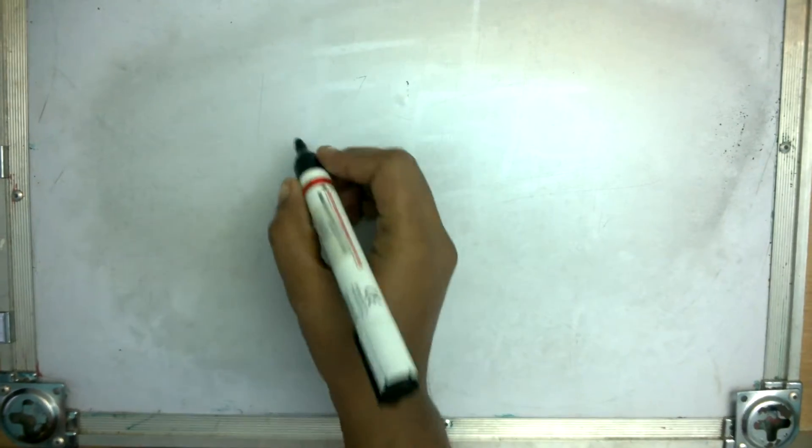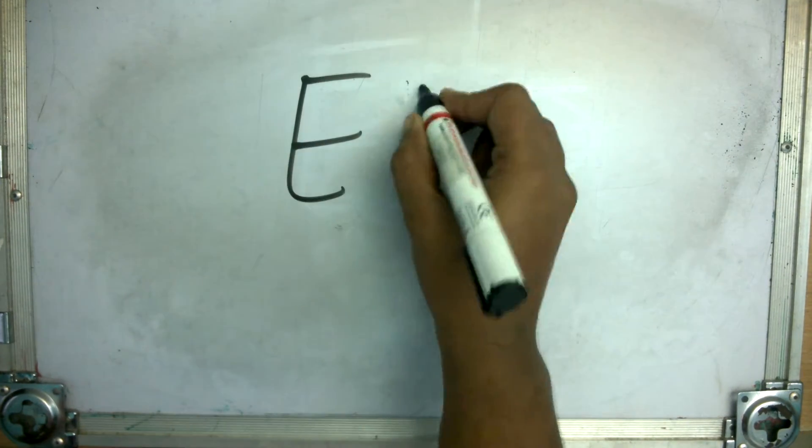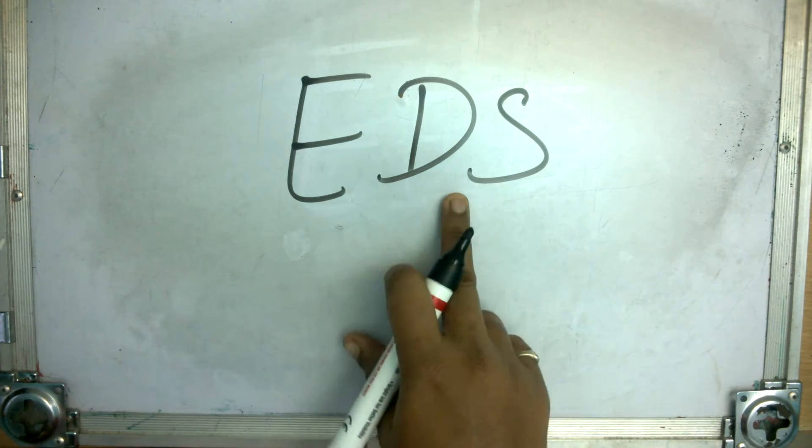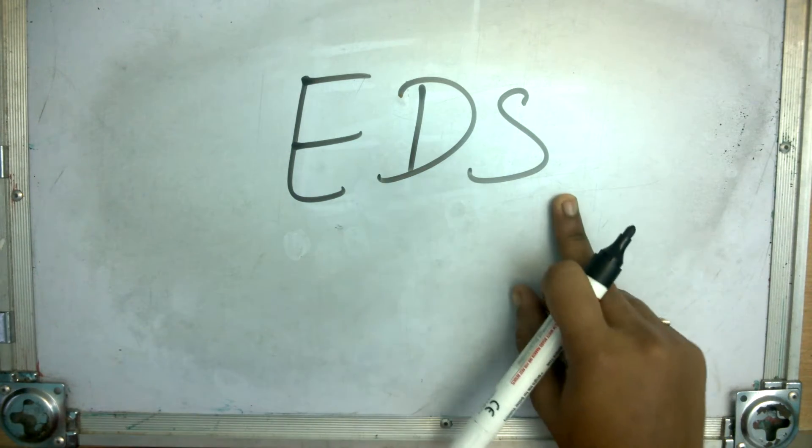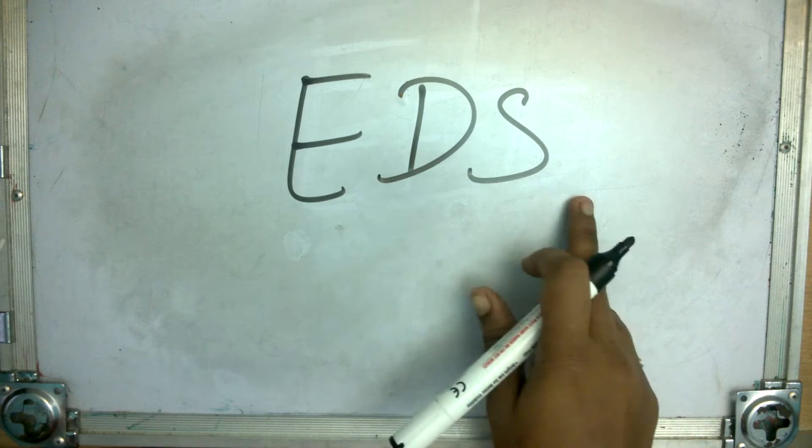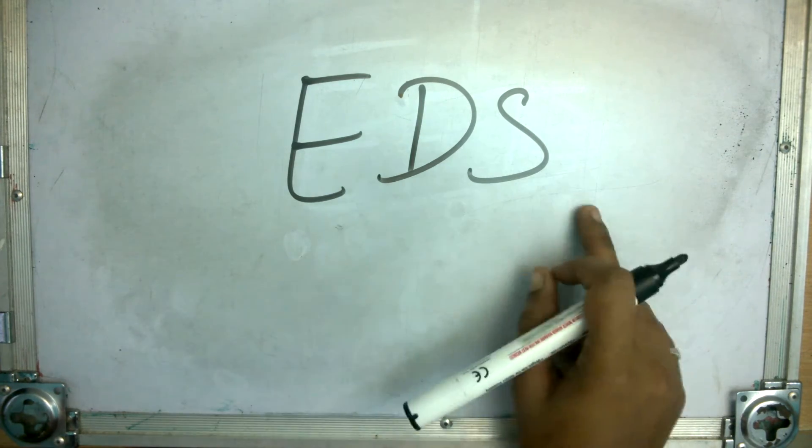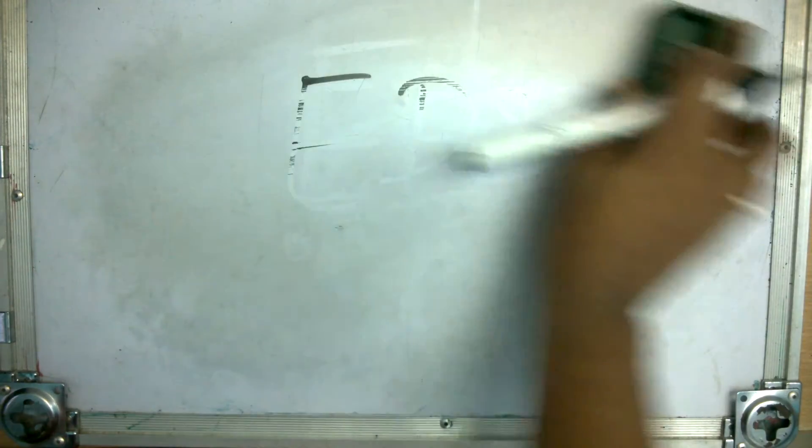Next one E-D-S. E sounds A, D sounds T, S sounds S. A-D-S, A-D-S, A-T-S. Got it?